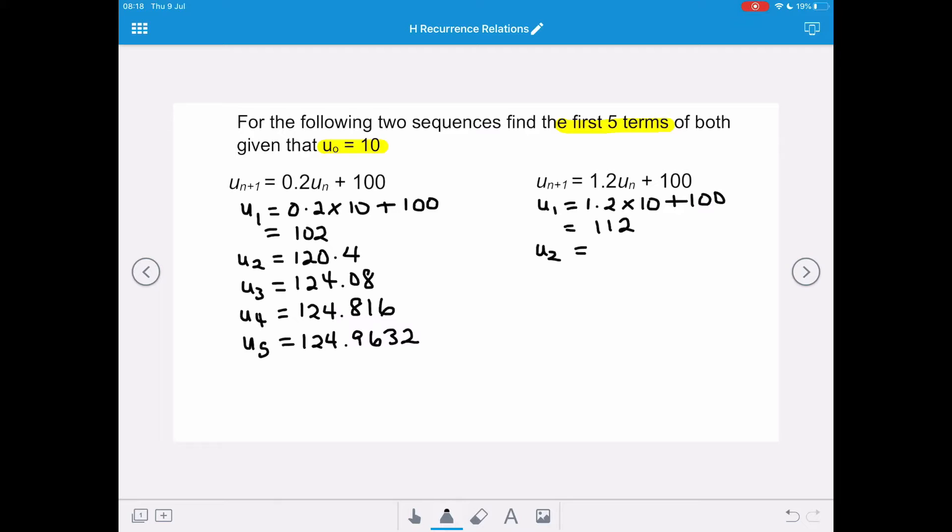For our second term, we're going to do 1.2 times 112 plus 100, giving us a u₂ of 234.4. u₃ is going to equal 381.28. Substituting u₃ into our recurrence relation, u₄ is going to be 557.536. And the fifth term in our sequence is going to be found by doing 1.2 multiplied by 557.536 plus 100, giving us a value of 769.0432.